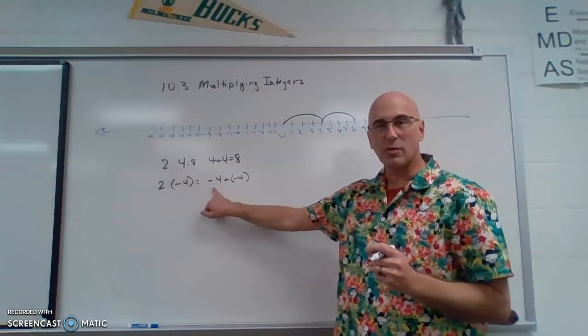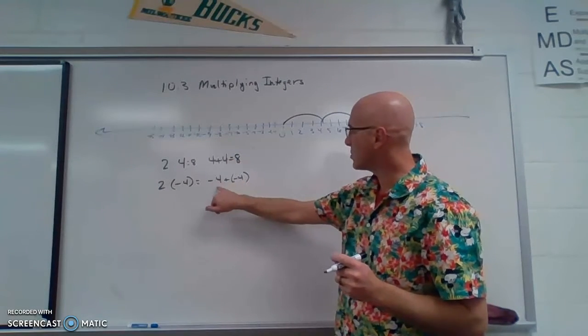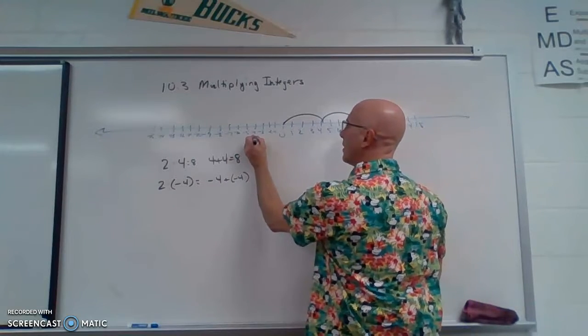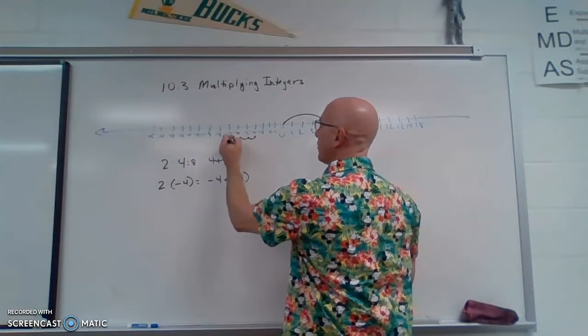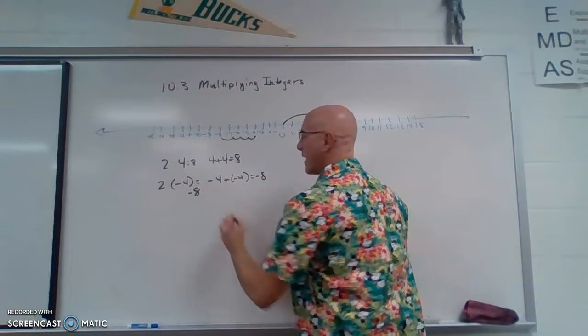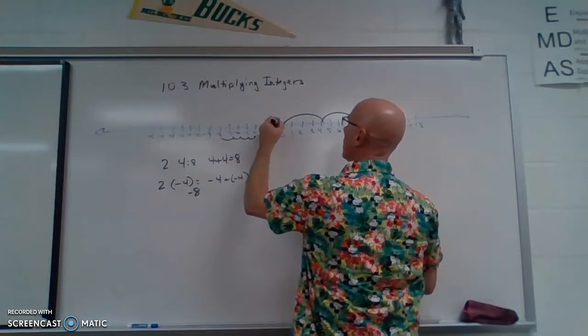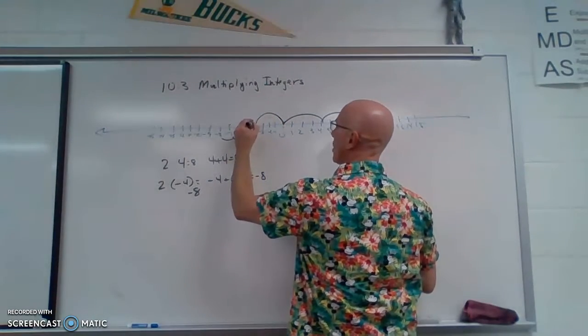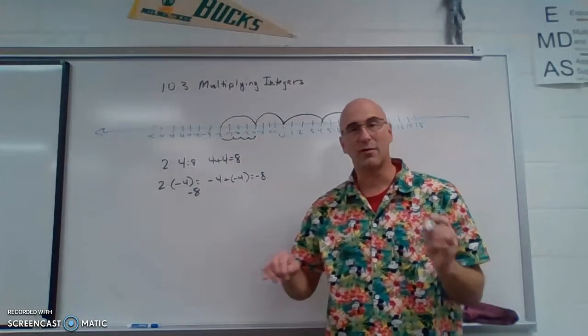So we know this from previous lessons. When we add a negative, we're going to start at negative 4 here and then move four more in a negative direction. So that is negative 8. We could also look at it this way on the number line. We have two jumps of negative 4 and we end up with negative 8.